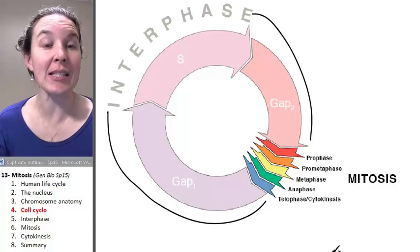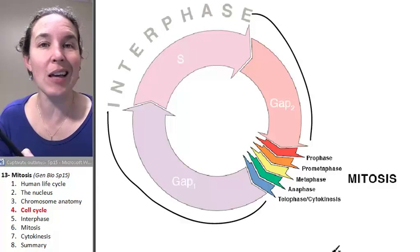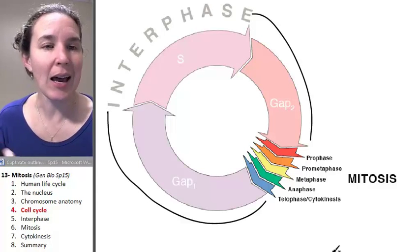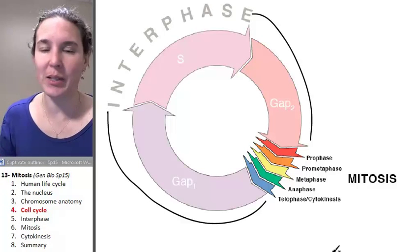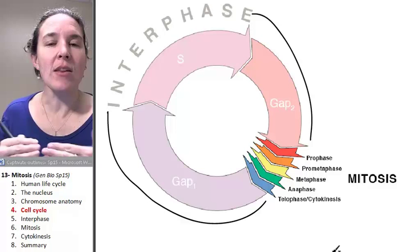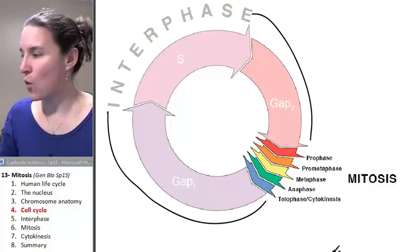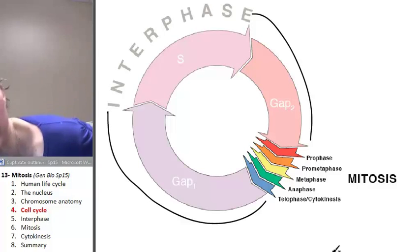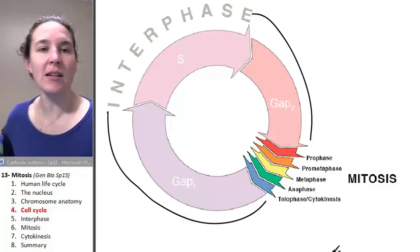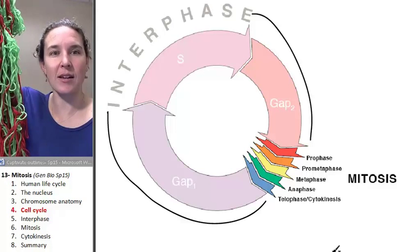Interphase is essentially where the cell is doing its thing — hanging out, being a cell. There are specific characteristics. For example, during interphase, the cell's DNA looks like this.